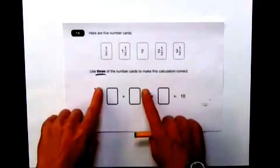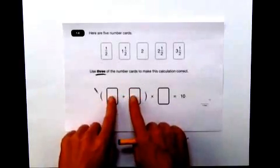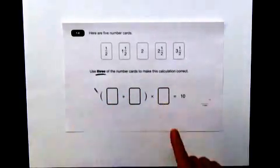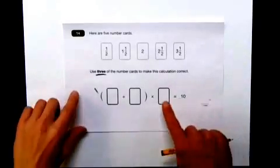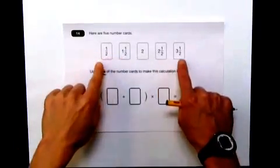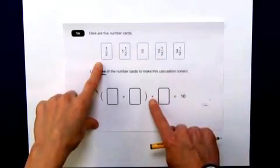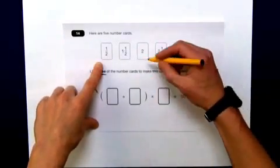Here I have a pair of brackets, so this bit will be done separately, a multiplication by another card. Now, me personally, multiplying by fractions is a bit of a nightmare, so I would try and choose to use this whole number to multiply by. So if that is going to go into there, multiplied by two.